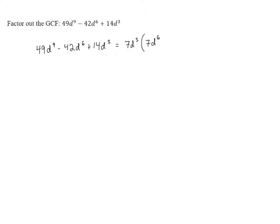And d to the 9th divided by d cubed is d to the 6th. Remember, when we divide powers of a variable, we end up subtracting the exponents. So 9 minus 3 gives us 6.